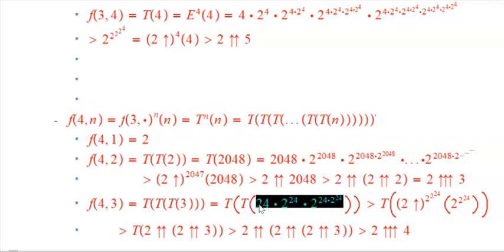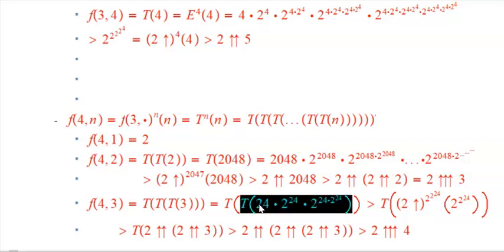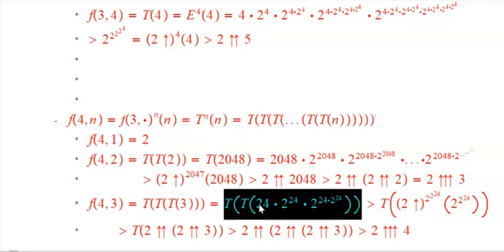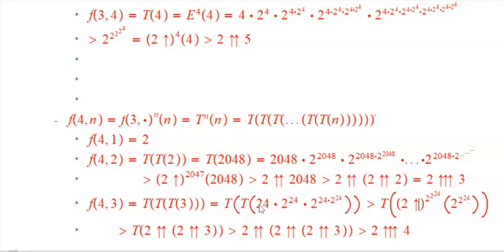It's two to the two to the something, but it's not ridiculous. Now I'm going to take T of that, which does this double up-arrow repeated exponentiation thing. And then I use that to control another double up-arrow repeated exponentiation process.